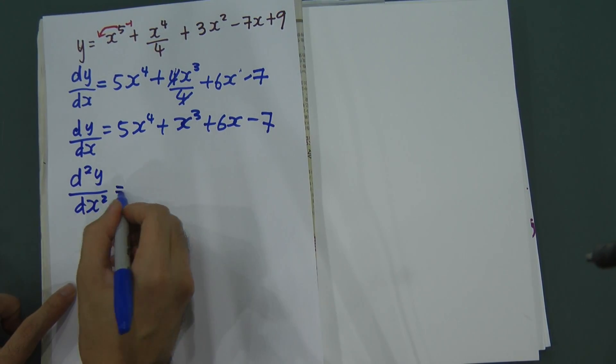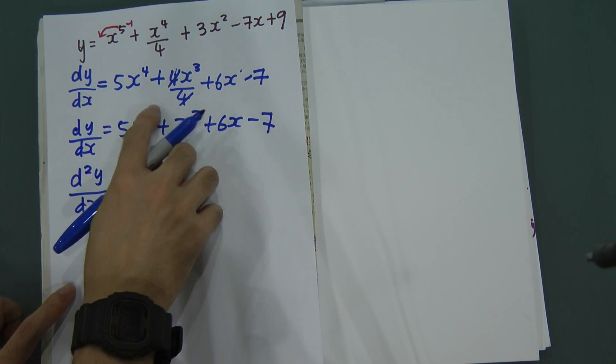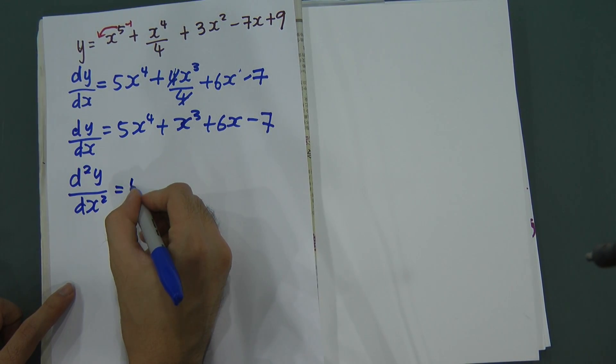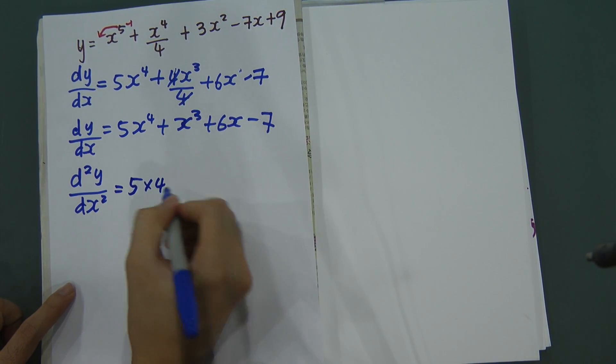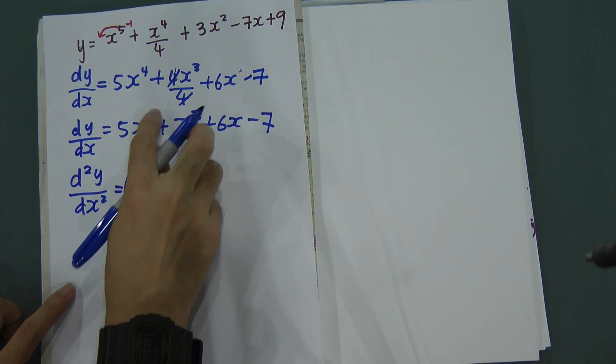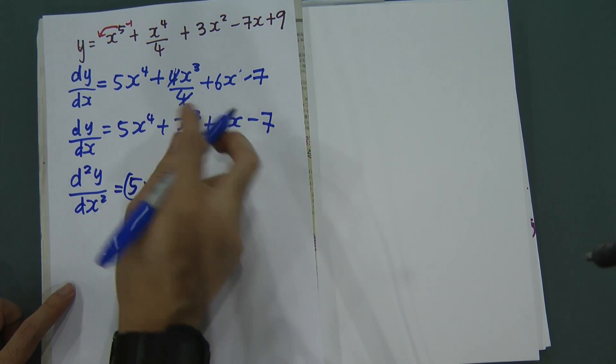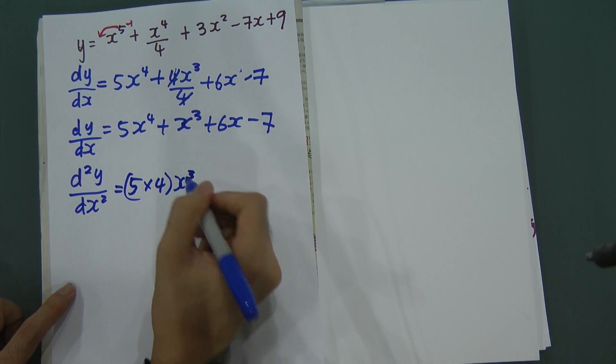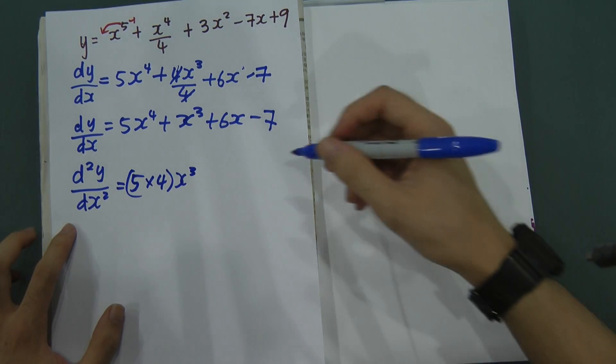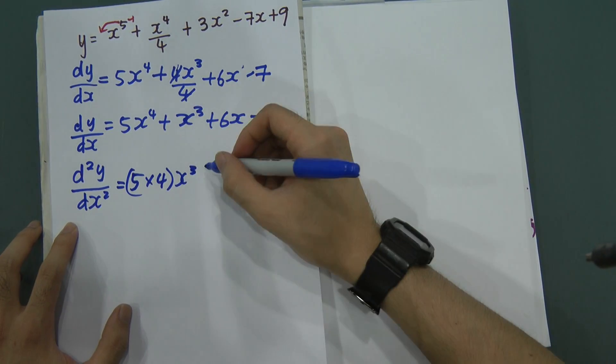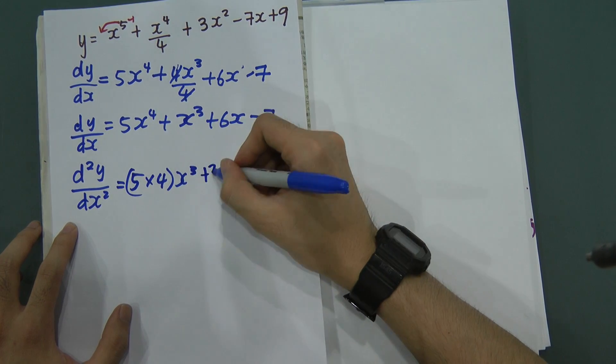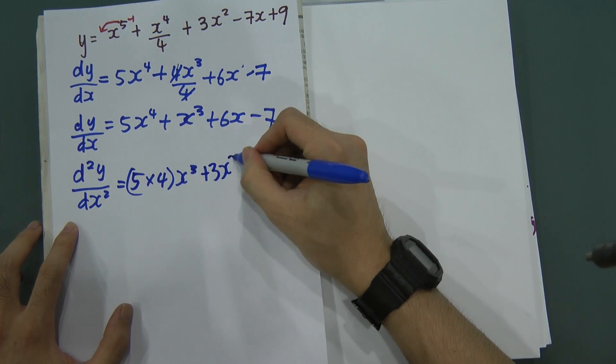Differentiate the second time means you differentiate one more time. This one, 4 move in front, it will become 5 multiple 4. And then x, 4 minus 1, you will get x power of 3. And then for this one, 3 move in front will become 3x. And then 3 minus 1, we will get 2.